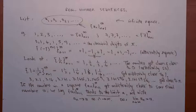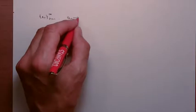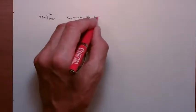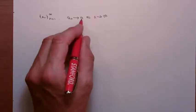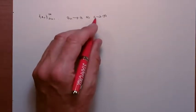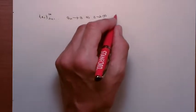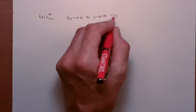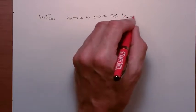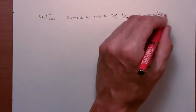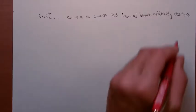Some sequences don't tend to a limit; other sequences do tend to a limit. We've got a sequence a_n from 1 to infinity. The intuitive description that the members of the sequence tend to a limit a as n tends to infinity corresponds to the fact that the absolute value of a_n minus a becomes arbitrarily close to zero.